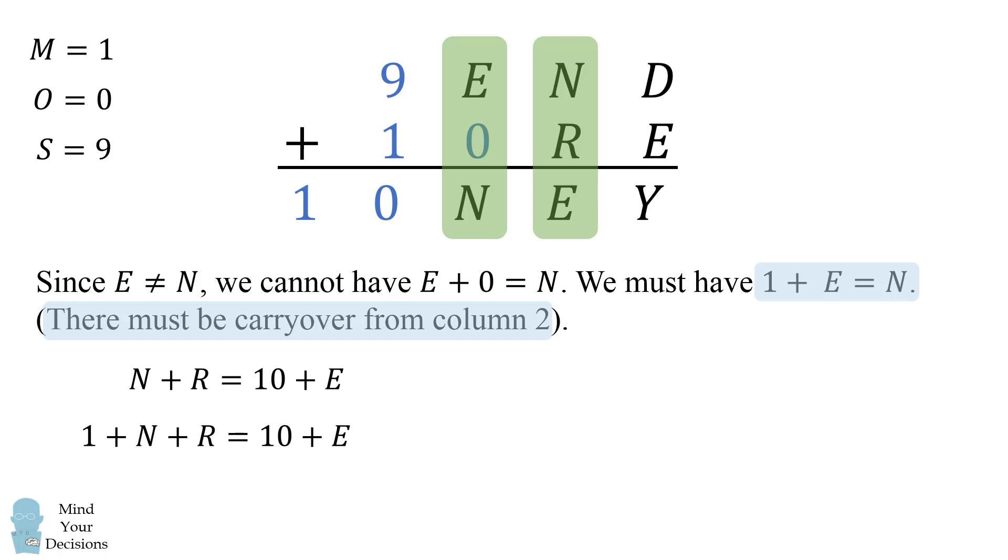Since we have 1 plus E is equal to N, we can substitute that in for N. We have 1 plus E plus R is equal to 10 plus E. This would imply that R is equal to 9. However, we cannot have R equal to 9 because S is equal to 9. So we eliminate this possibility.